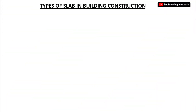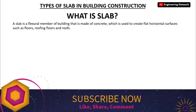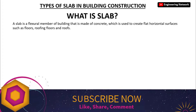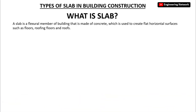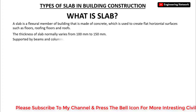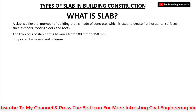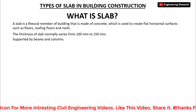A slab is a flexural member of a building that is made of concrete, which is used to create flat horizontal surfaces such as floors, roofing floors, and roofs. The thickness of a slab normally varies from 100 millimeters to 150 and 50 millimeters, and it is supported by beams and columns.